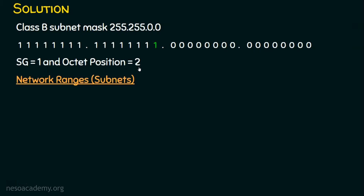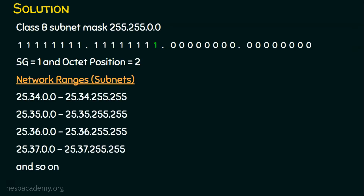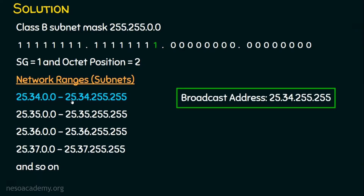We have already created the network ranges — I copied this from the previous problem. We know the first subnet will be from 25.34.0.0 to 25.34.255.255. The IP address mentioned in the question falls in the first subnet. We know the first address is the network address and the last address of the subnet is the broadcast address.